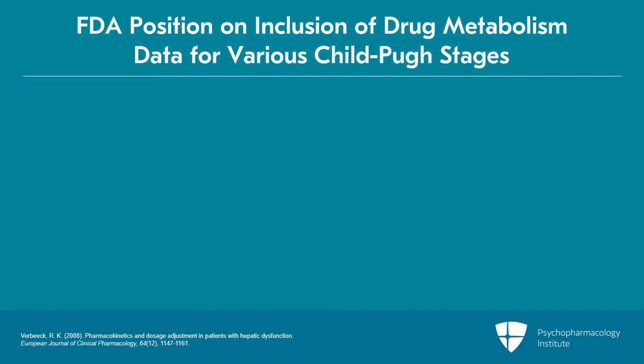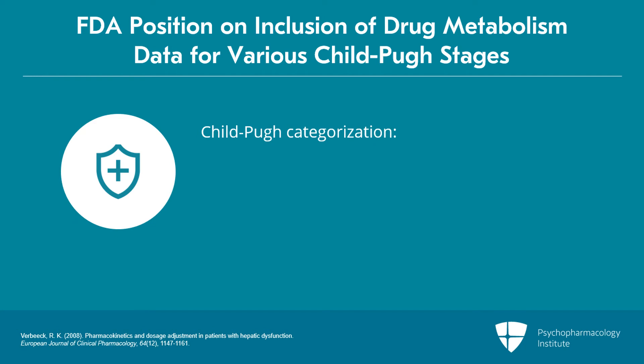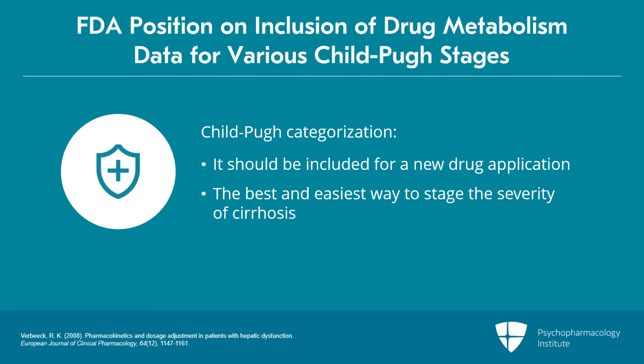From this, the FDA concluded that there may be other approaches to assess varying degrees of hepatic impairment, but a Child-Pugh categorization should still be included for each patient as part of a new drug application. Meaning, if you want to have language about the use of your medication in hepatic impairment, you have to do studies for people who are Child-Pugh A, Child-Pugh B, and Child-Pugh C. The Child-Pugh classification is the best and easiest way for any clinician to stage somebody's severity of cirrhosis and therefore decide if they need to alter initial drug dosages.